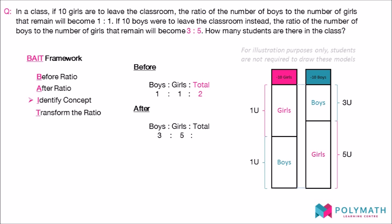After identifying the question as a total unchanged question, we then add in a new column in both ratios to reflect the total number of units in the ratios. The total number of units in the before ratio is 2 and the total number of units in the after ratio is 8. Knowing that the total is unchanged, the total number of units in the before and after ratio should be the same. But it is currently not the same.